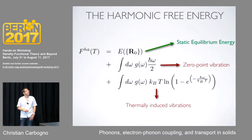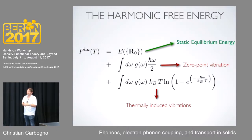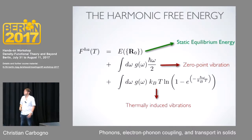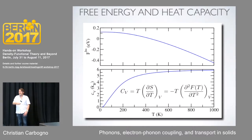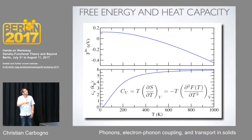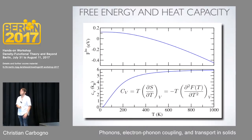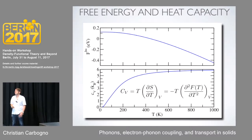From such a band structure, you can calculate a density of states — exactly like you've done in the electronic case, but this time integrating over vibrational frequencies. If you have the density of states, you can evaluate the free energy — how does the motion of your nuclei change the free energy as a function of temperature. You have one term corresponding to the zero-point vibration plus one additional term that scales with temperature for thermally induced vibrations. From that you get properties like the free energy, or its second derivative — the specific heat — which gives the T³ dependence at low temperatures and approaches the Dulong-Petit limit at very high temperatures.